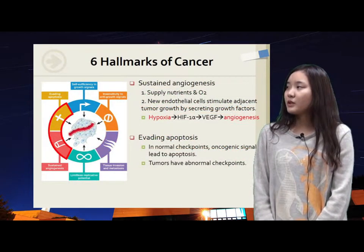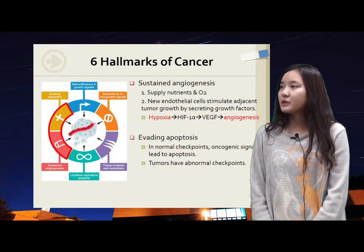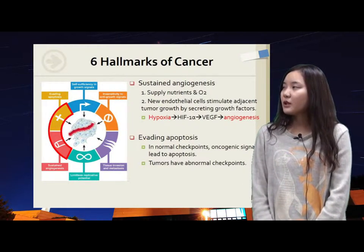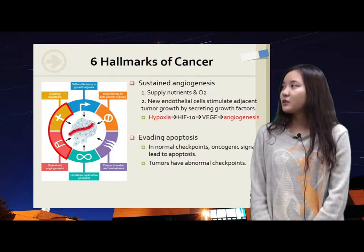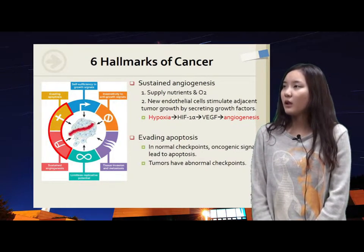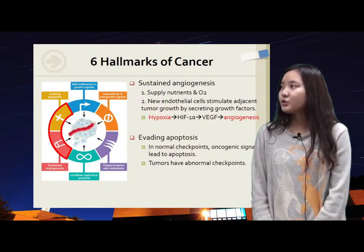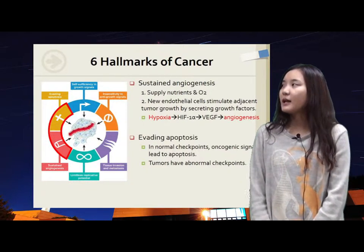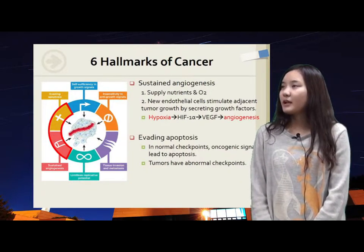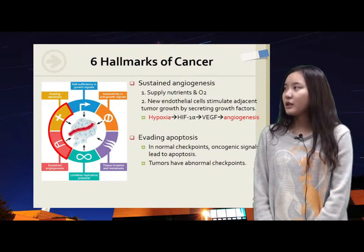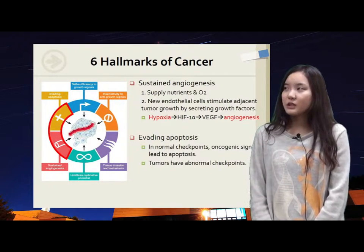Tumor needs new blood vessels to proliferate tumor cells bigger than 2 mm. By angiogenesis, nutrients and oxygen can be supplied. Also, new endothelial cells stimulate adjacent tumor growth by secreting growth factors. When a certain tumor part is hypoxic, the cells make HIF1-alpha protein, which makes vascular endothelial growth factors, causing angiogenesis.